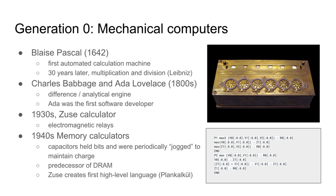As early as the mid-1640s we see the introduction of a mechanical calculating machine by Blaise Pascal. One is pictured here on the right. This machine could do addition and subtraction primarily by setting rotating dials to different decimal values — each dial represents a digit from 0 to 9, with printed results for individual digits shown at the top.